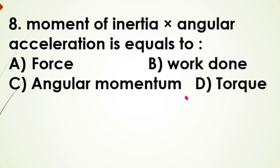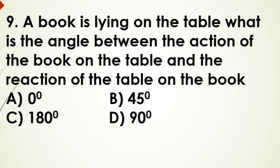Ninth question: a book is lying on the table, what is the angle between the action of the book on the table and the reaction of the table on the book? Options: A) zero degree, B) 45 degree, C) 180 degree, and D) 90 degree. Answer is 180 degree.